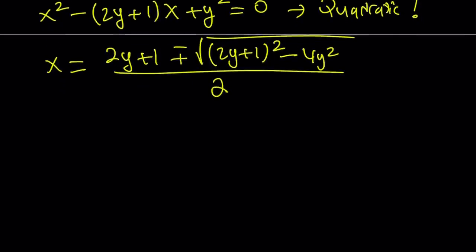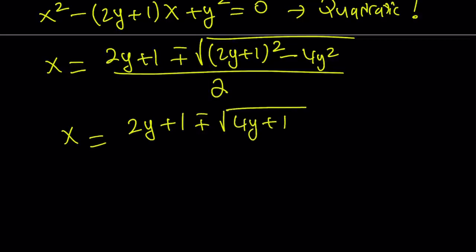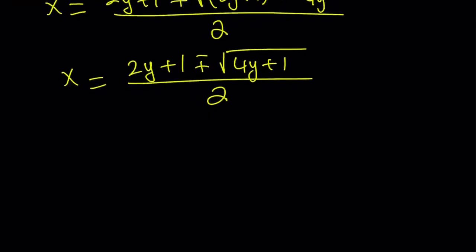If you subtract 4y squared from the expression inside the parentheses, 4y squared cancels out, and you end up with the following: you get 2y plus 1 plus or minus the square root of 4y plus 1, and the whole thing is divided by 2. So the quadratic formula gave us two solutions. But which solution are we going to use? Because this function is supposed to have a single unique inverse, and we have some conditions to check against that.